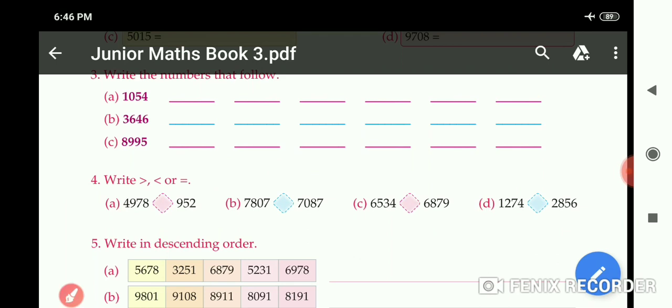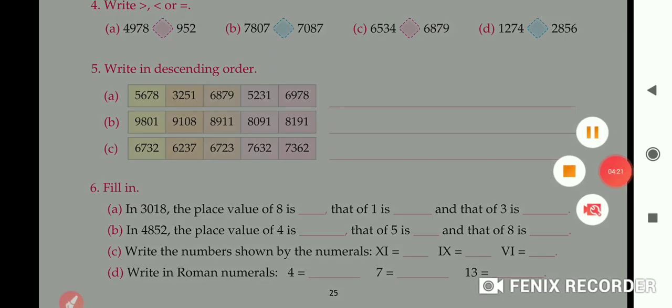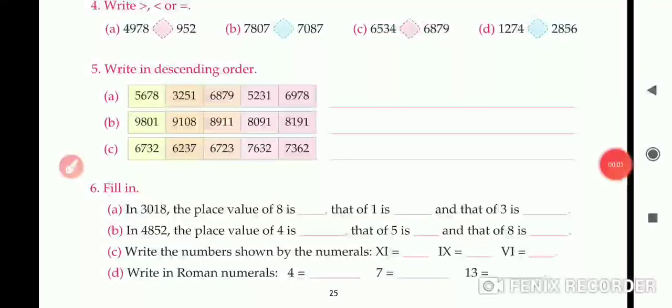Now come to question number 5: Write in descending order. We have done descending order earlier also, so once again, understand what is descending order. In descending order, we write down the greatest number first, after that smaller, and at last the smallest number.